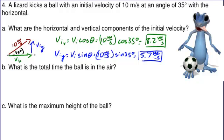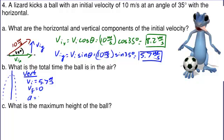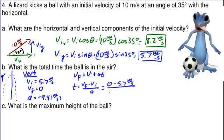Now we have the components of the initial velocity. We're asked to find the total time the ball's in the air — a vertical problem. The ball comes up and returns to the same level, so let's cut this motion in half. Vertically: vi is 5.7 meters per second, vf at its highest point is zero, acceleration is negative 9.81 meters per second squared. Using t equals vf minus vi over a: t equals zero minus 5.7 meters per second over negative 9.81 meters per second squared, giving 0.58 seconds on the way up. The total time is twice that, or about 1.16 seconds.